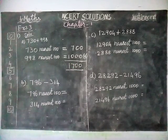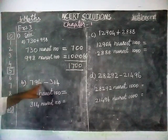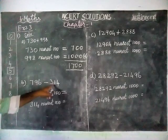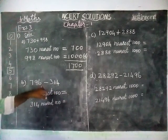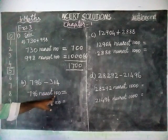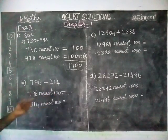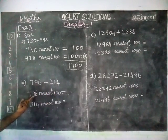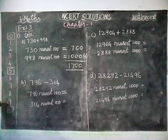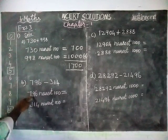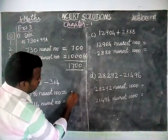Now next sum, option B: 796 minus 314. This is also a 3-digit number, so we are going to convert to nearest 100. Here the 10th place is 9. When 9 is coming, we have to choose the next 100. Next 100 is 800.